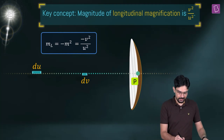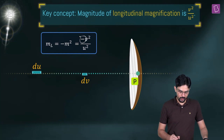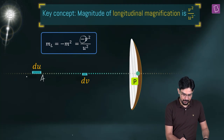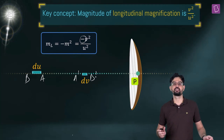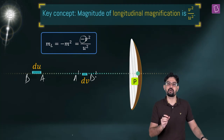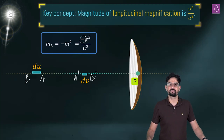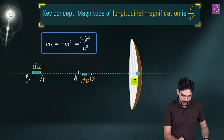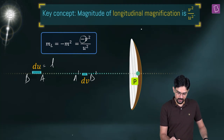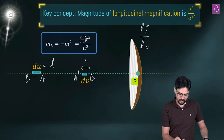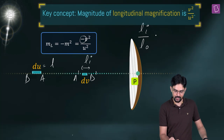Let me talk about this negative sign a little bit. If this is the object placed as AB, then the image will be A-dash B-dash, and this information is encapsulated by the negative sign. So dU is given to you as L. The longitudinal magnification is the length of the image divided by the length of the object, so this is the length of the image that we want to find, and it is going to be equal to V squared by U squared.